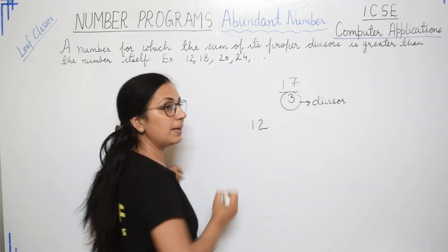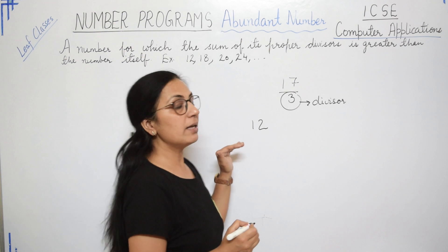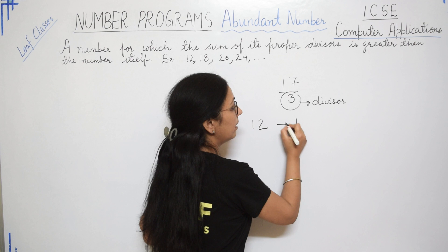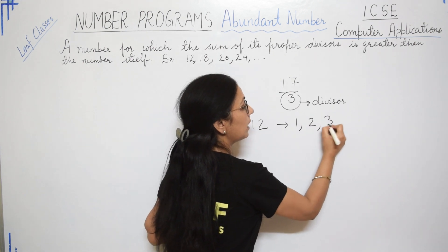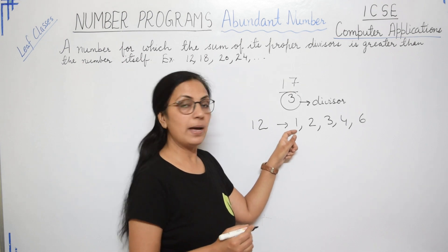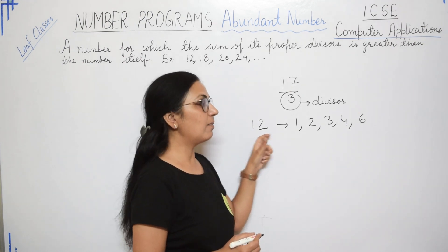Let me start with 12. 12 is the first abundant number. So the divisors, the proper divisors of 12 are 1, 2, 3, 4 and 6. 12 divided by 1, remainder is 0. 12 divided by 2, remainder is 0.